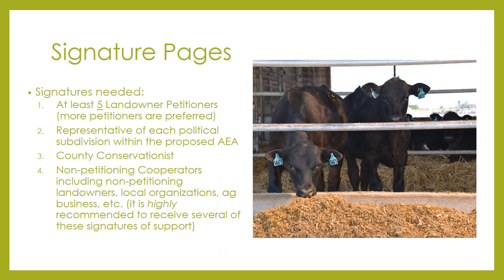In order to submit an AEA petition, you are required to have a signature for at least five petitioning landowners, a representative from each political subdivision the proposed AEA is in, and the county conservationist. These signature pages show the committee that there is community support and that local governments have been made aware of this project. The landowner petitioners will act as the key drivers of this petition, and it is encouraged to engage with as many landowners as possible to create a stronger petition.